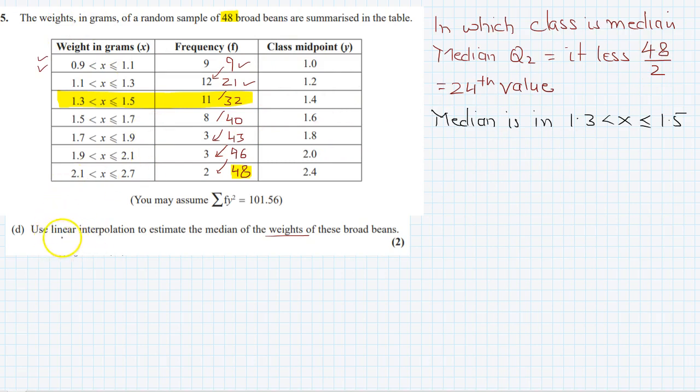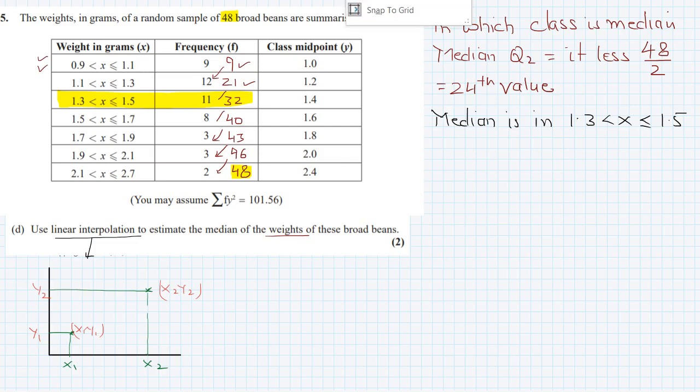How we are going to use linear interpolation. Now what is linear interpolation? For example, I have these two axes. This is the value of one point, and this is the value of another point. This is x1, this is x2. This one is y1 and this is y2. So this point is x1, y1 and this is x2, y2. Now if I join this line.